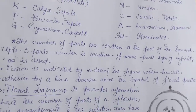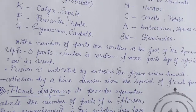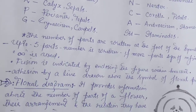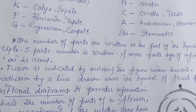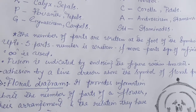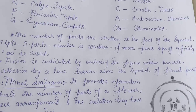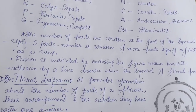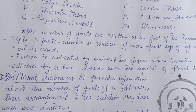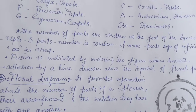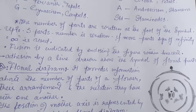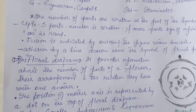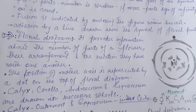Fusion is indicated by enclosing the figure within brackets, meaning the floral parts are fused together. Adhesion is shown by a line drawn above the symbol of the floral parts.